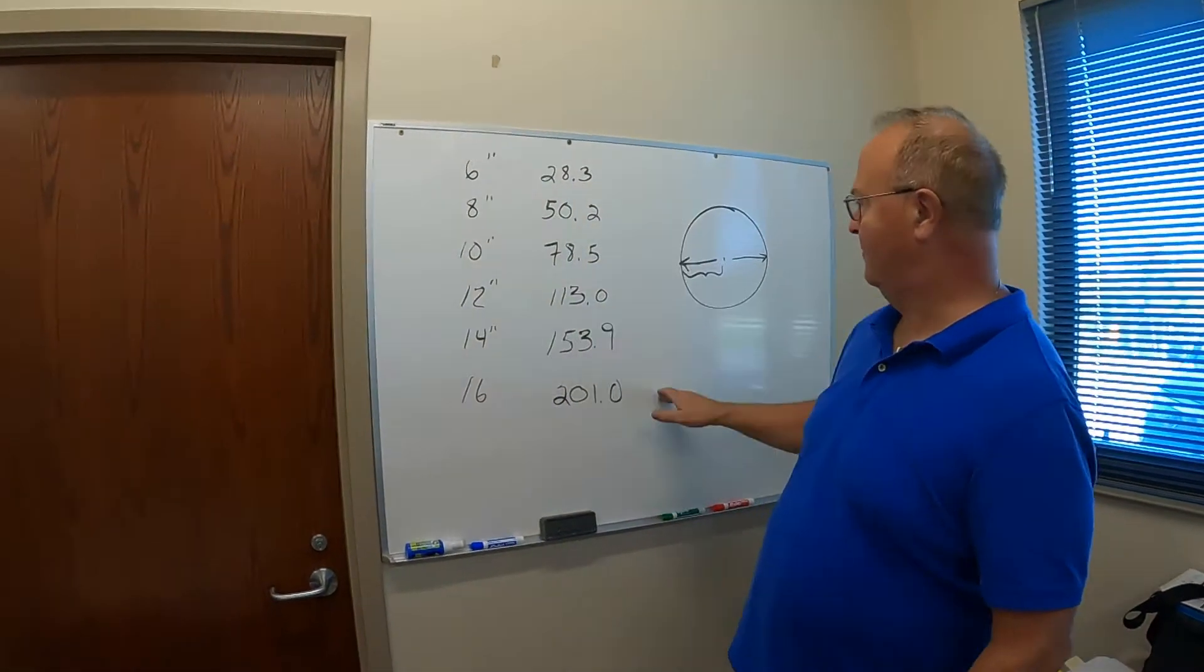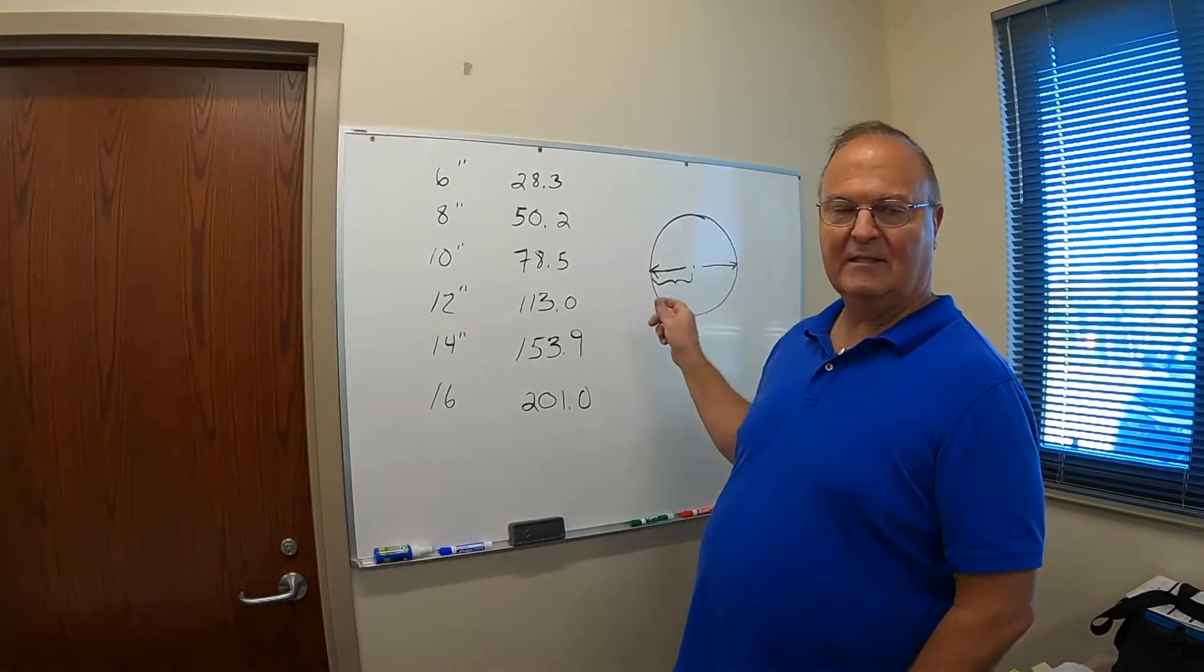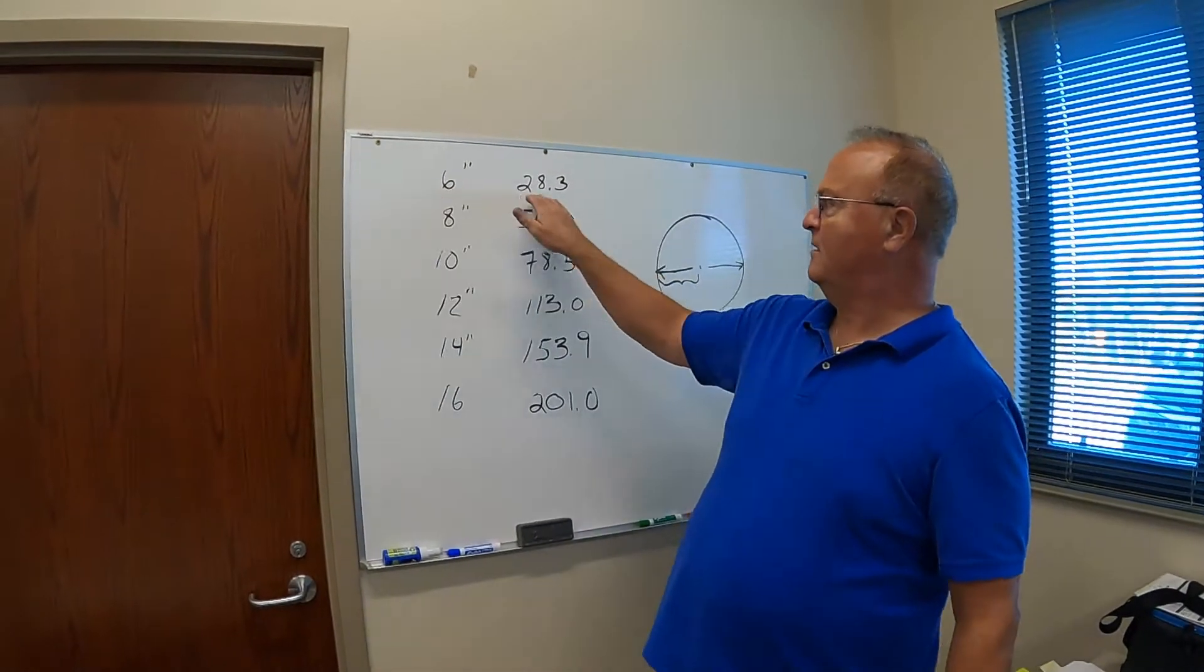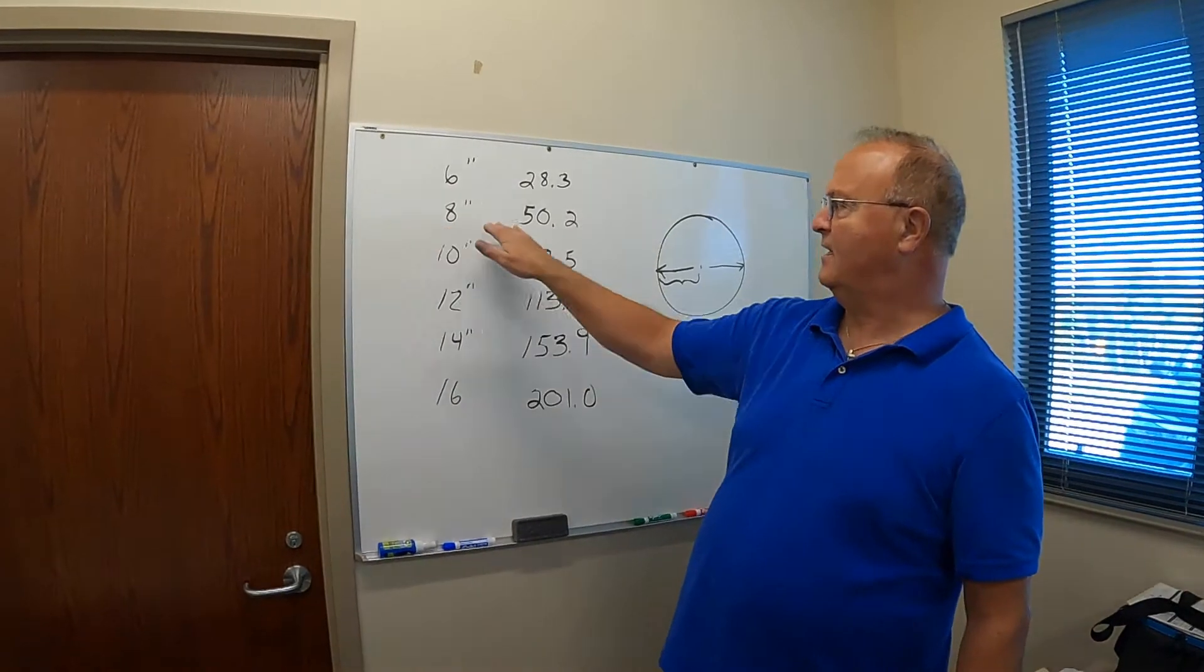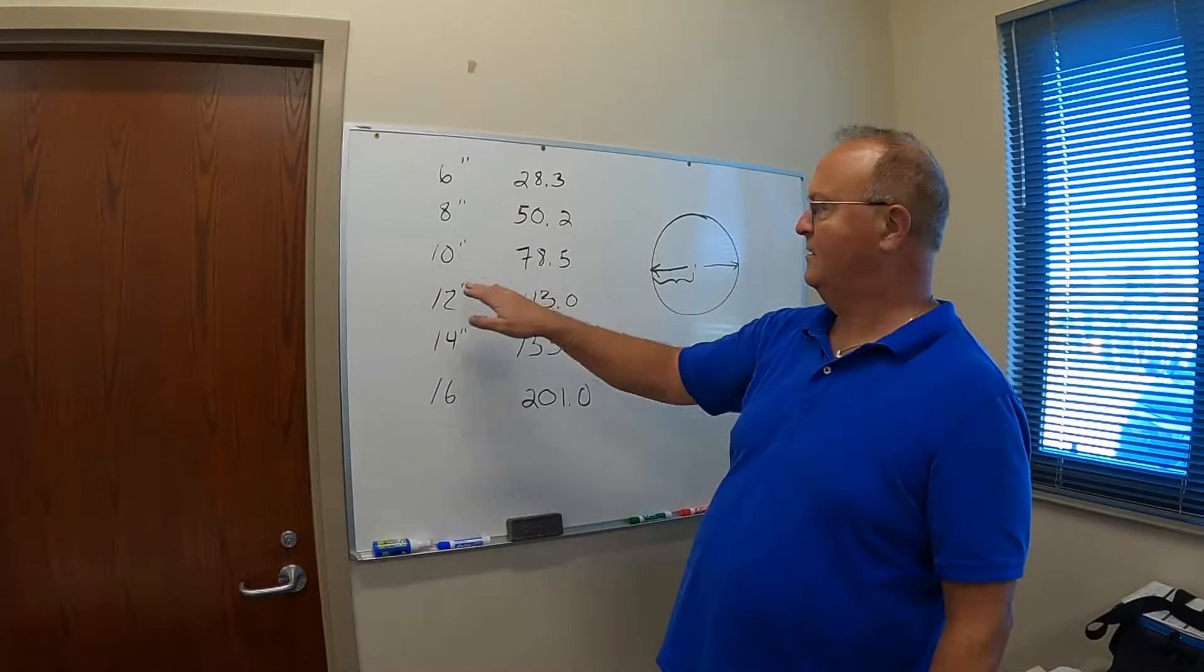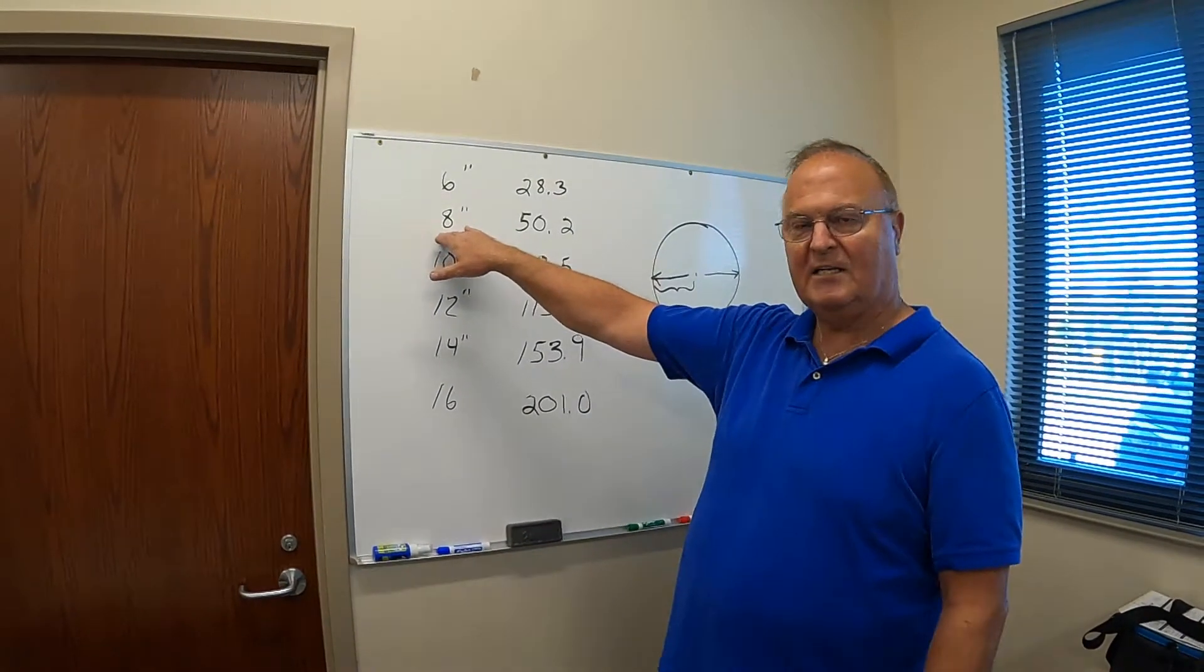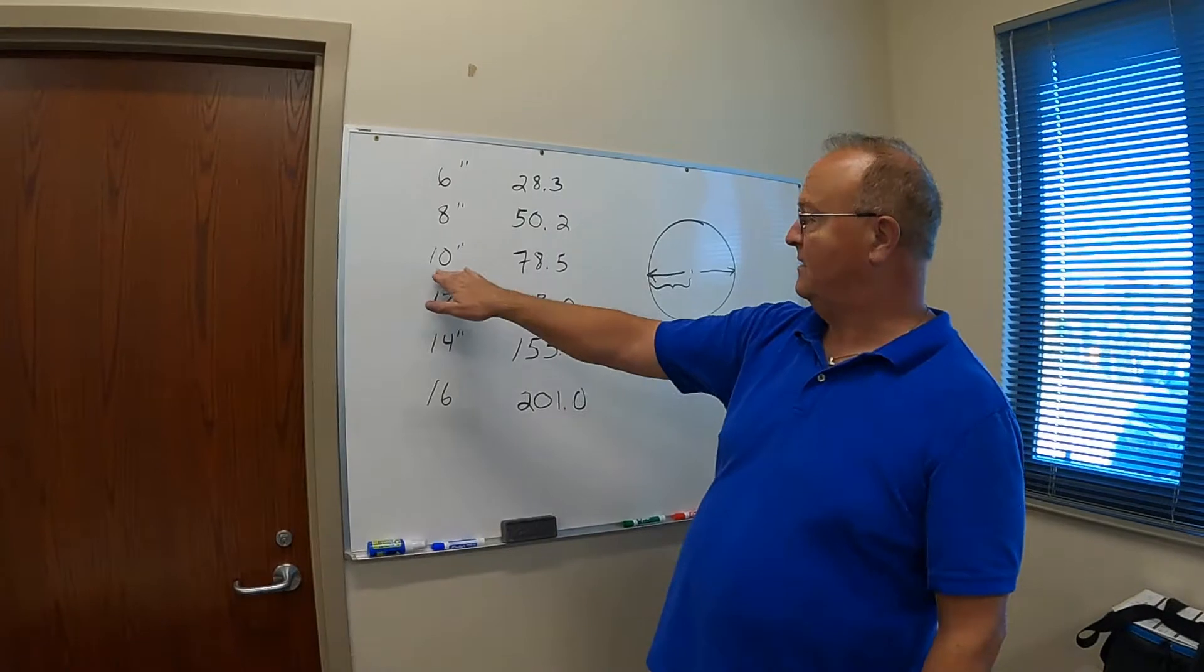So you would take the radius, and you'd square it, and you'd take it times pi, 3.14. So a 6 inch round duct is 28.3 square inches, an 8 inch round duct is 50 square inches. So if you want, you could run four 8 inch ducts, and you'd have between 180 and 200 square inches.